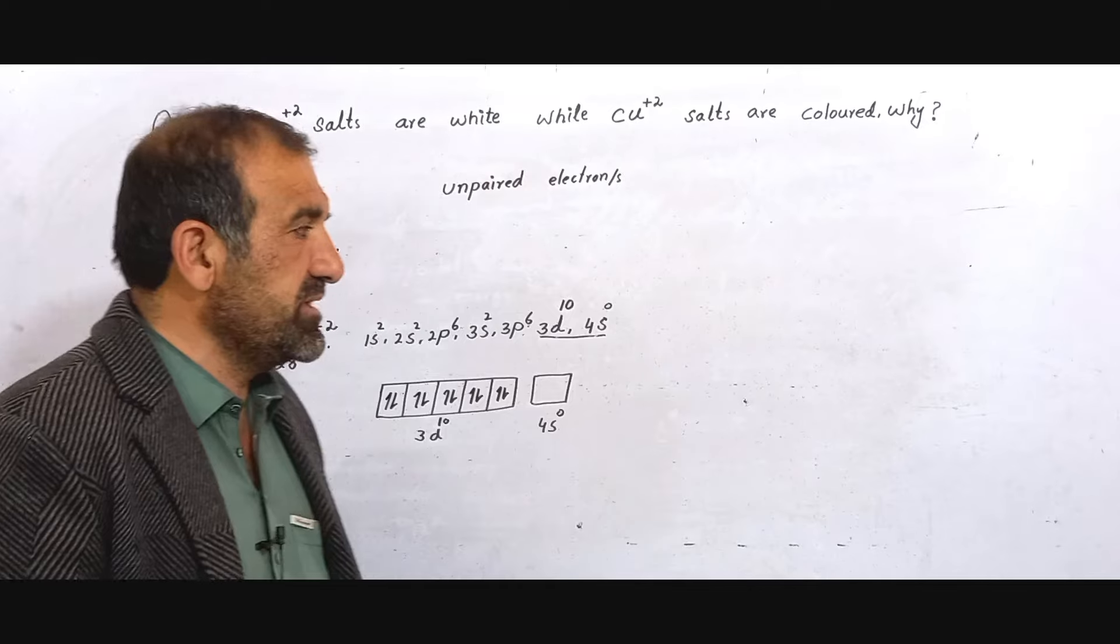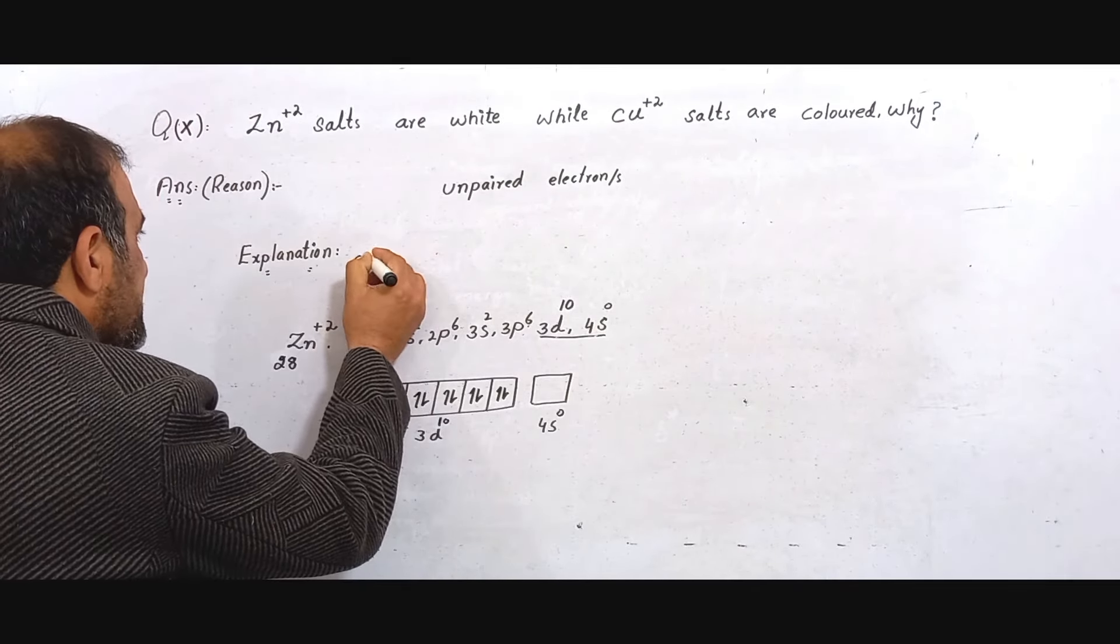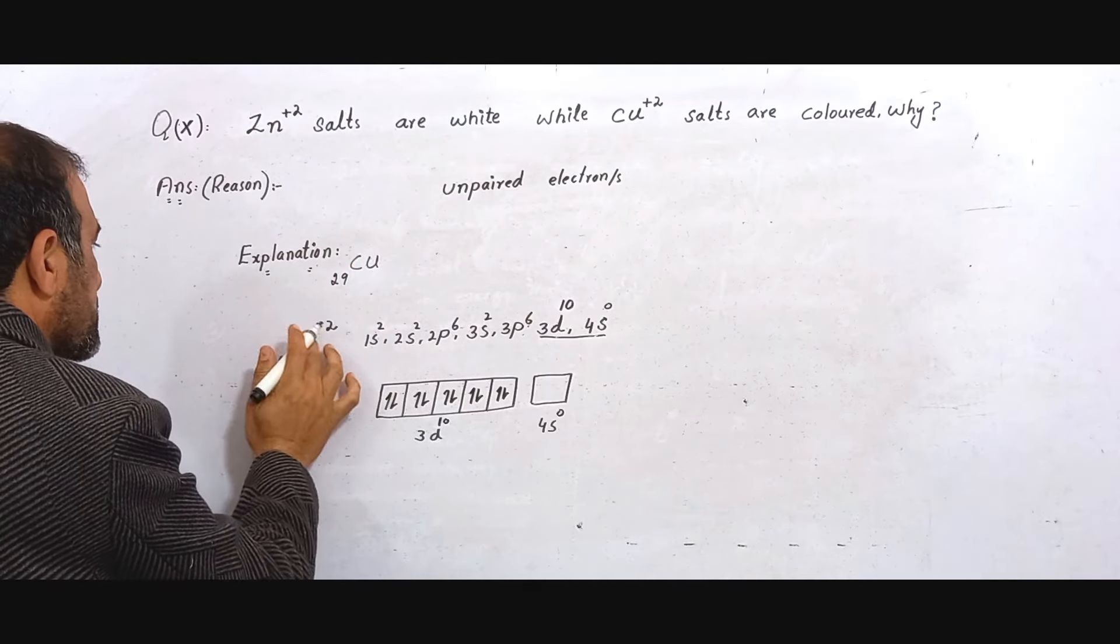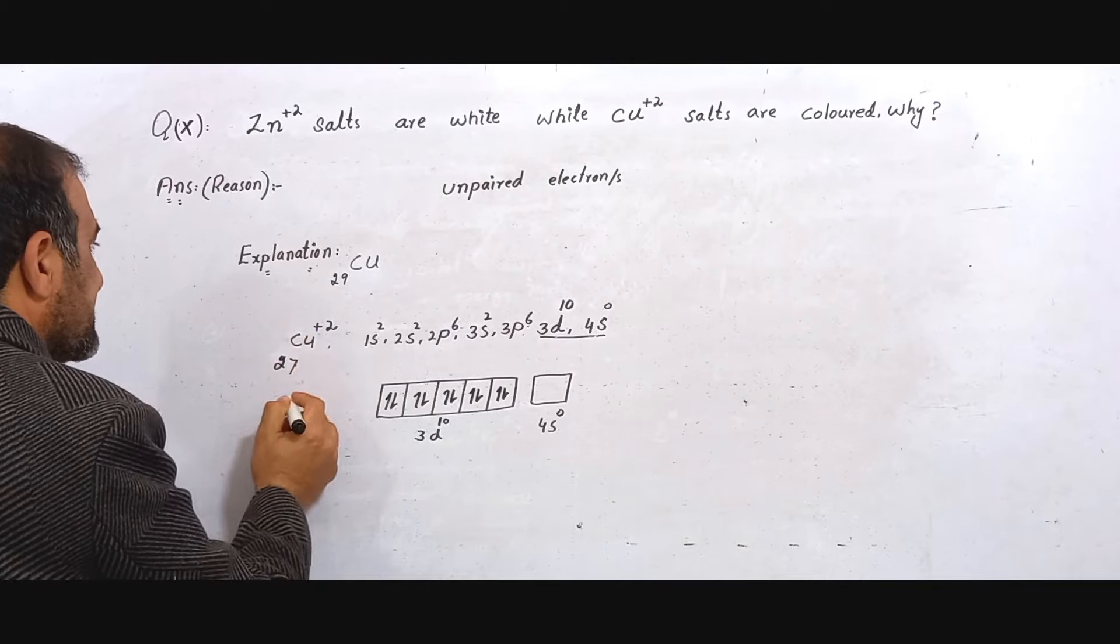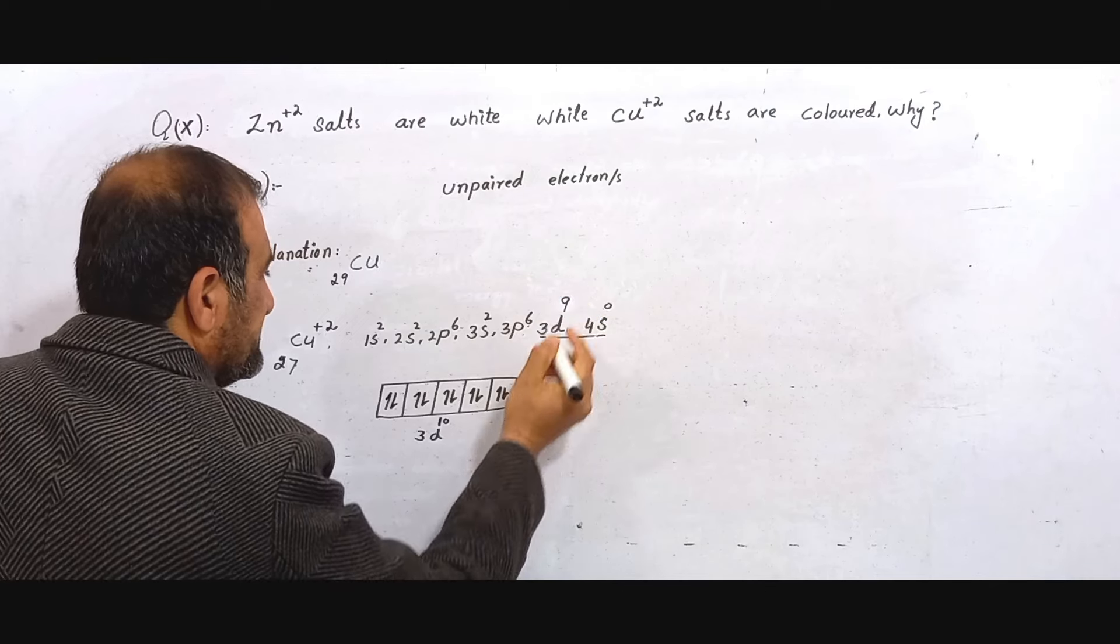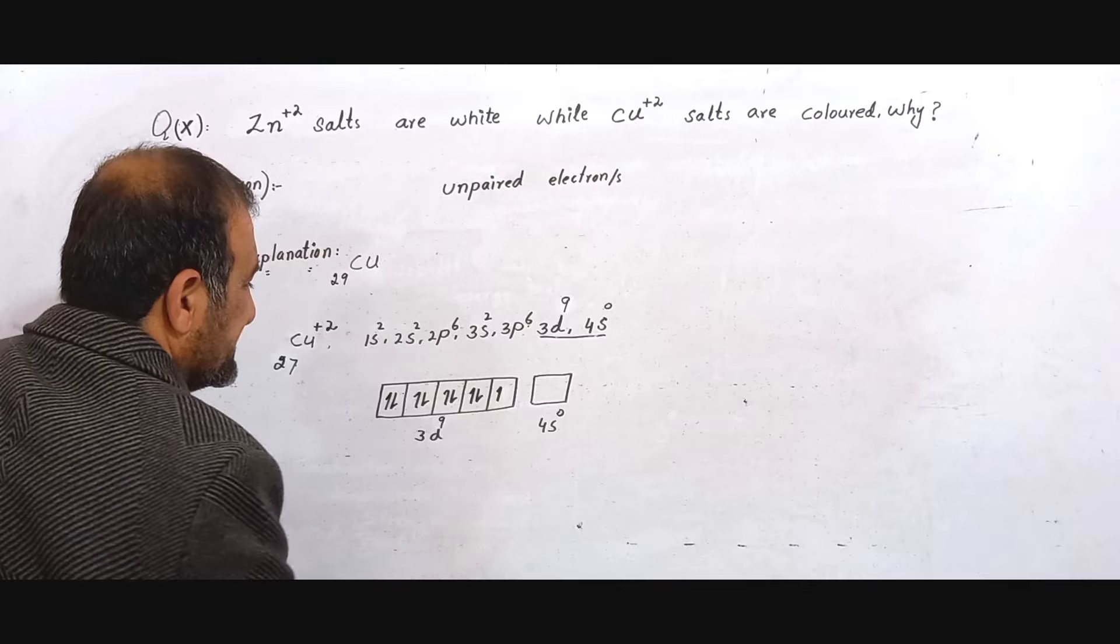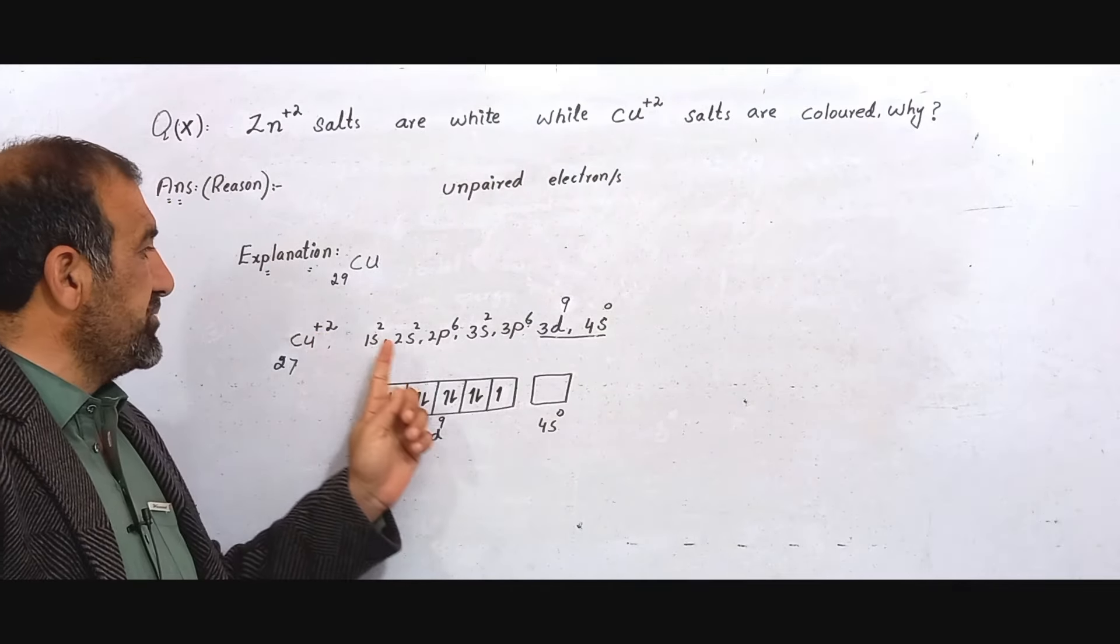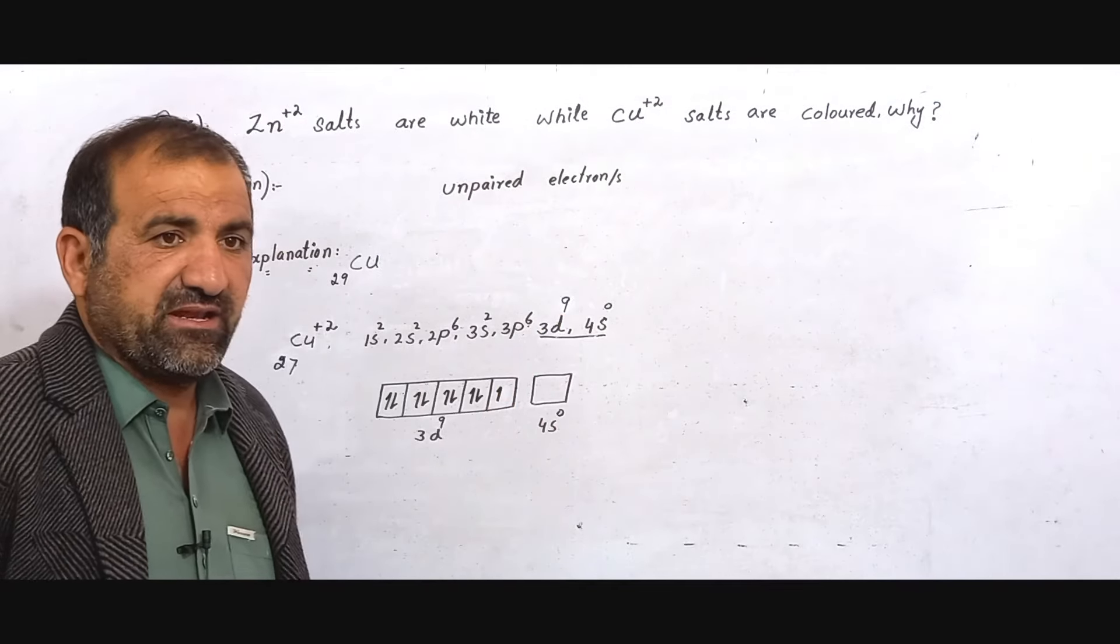Therefore Zn salts appear white colorless to our eyes. Similarly, Cu²⁺ - copper has total 29 electrons. When it becomes Cu²⁺, there are 27 electrons. That's why you have one unpaired electron. The Cu²⁺ valence shell, the d sub-shell, the d orbital has one unpaired electron.